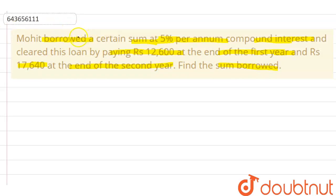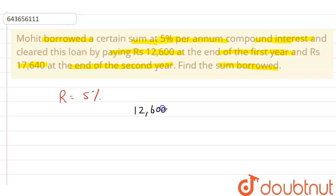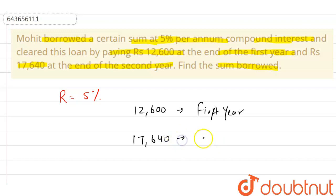As the question says, Mohit borrowed a certain sum at 5% per annum. This means the rate R is equal to 5% compound interest. He cleared this loan by paying Rs 12,600 at the end of the first year and Rs 17,640 at the end of the second year. We have to find the sum that he borrowed.